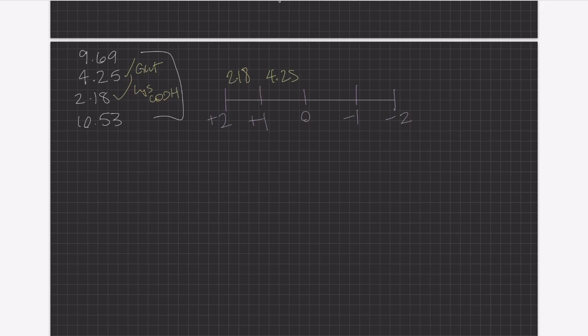The second most basic is the 9.69 on the NH3 of alanine. This leaves us with the final pKa of 10.53 from lysine's NH3 group.